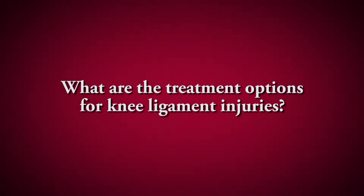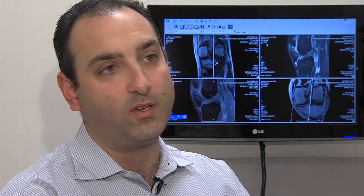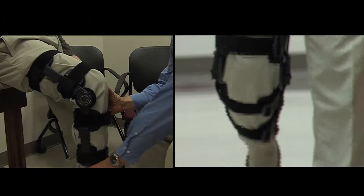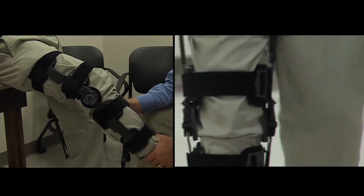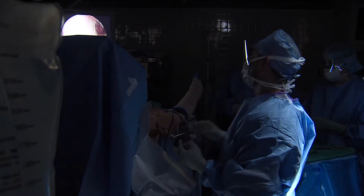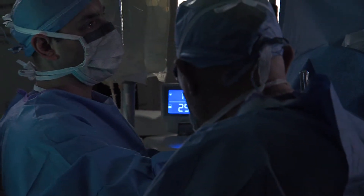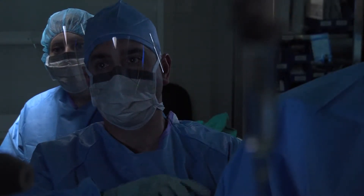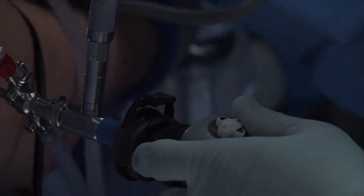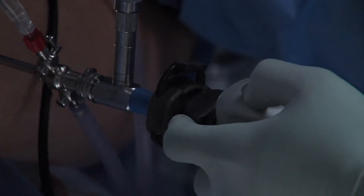Treatment for ligament injuries depends on the type of ligament that's injured. Some ligament injuries can be treated just in a brace and given time to heal, whereas other ligament injuries such as an anterior cruciate ligament injury will need to be surgically reconstructed. When we fix an ACL, it's one of the ligaments that can't just be sewn together — you actually have to reconstruct it by building a new ligament using a tendon that comes from either the patient themselves or from a donor.